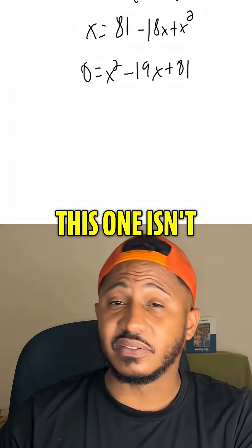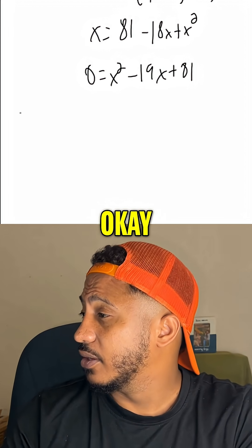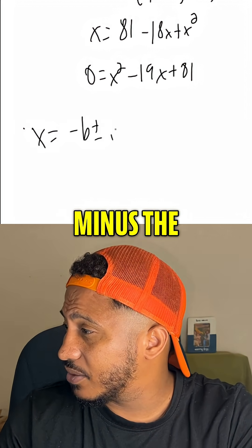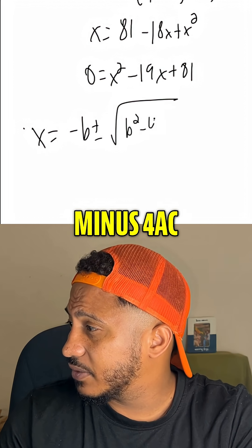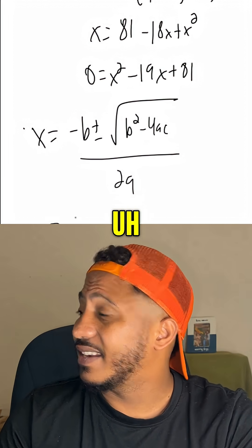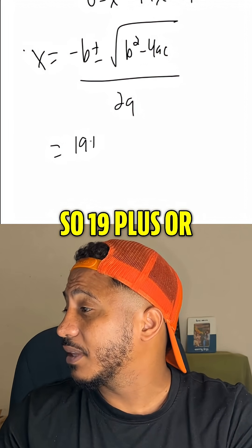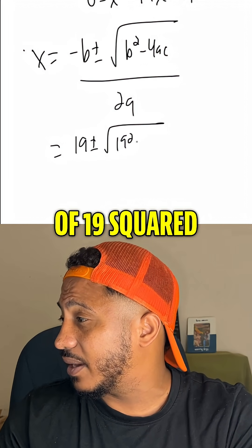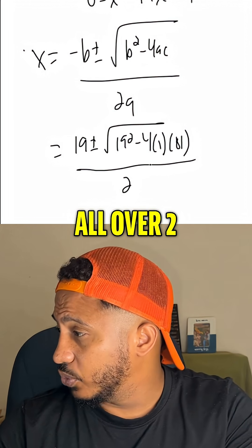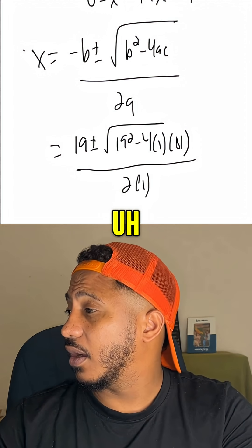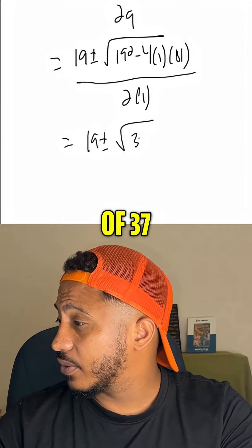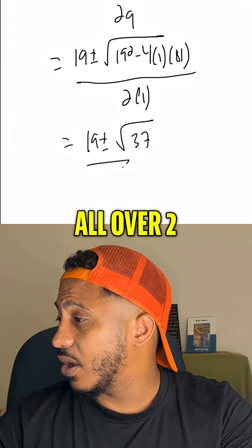Now we try factoring the other side, but this one isn't factoring, so we just have to use the quadratic formula: negative b plus or minus the square root of b squared minus 4ac, all over 2a. So that would be negative negative 19 — so 19 plus or minus the square root of 19 squared minus 4 times 1 times 81, all over 2 times 1. That simplifies to 19 plus or minus the square root of 37, all over 2.